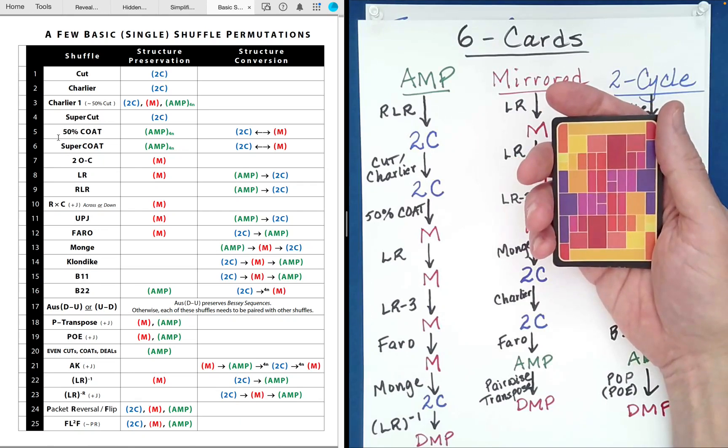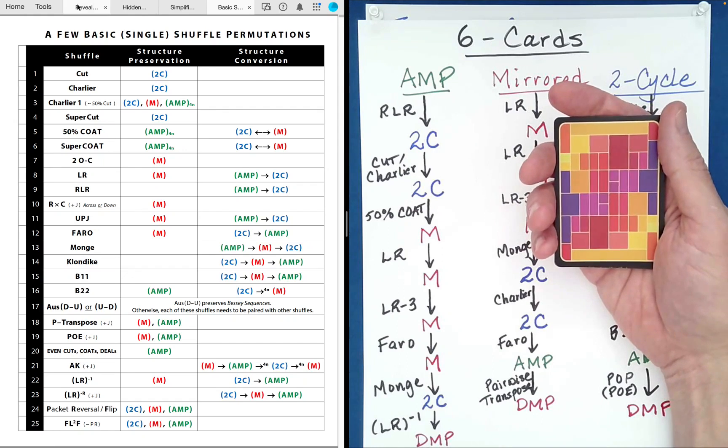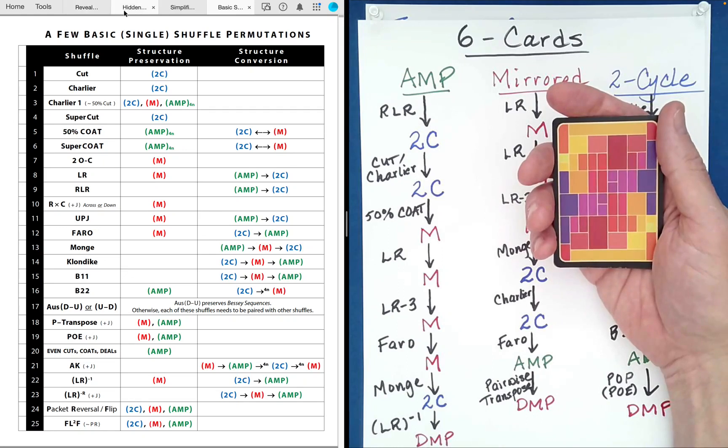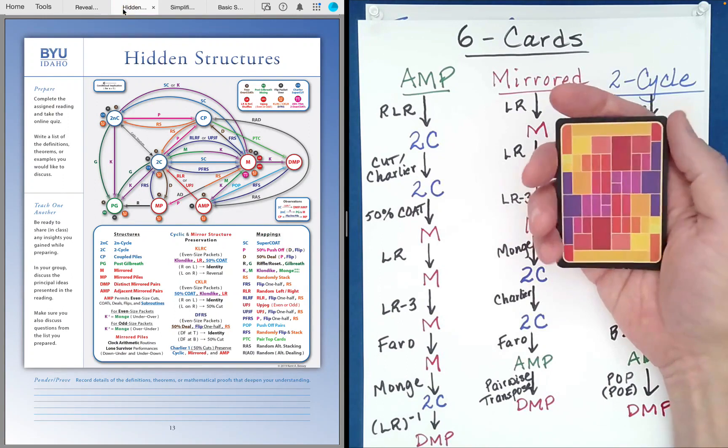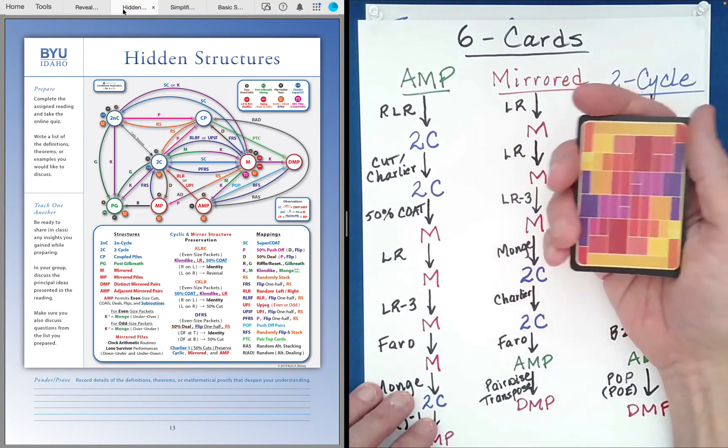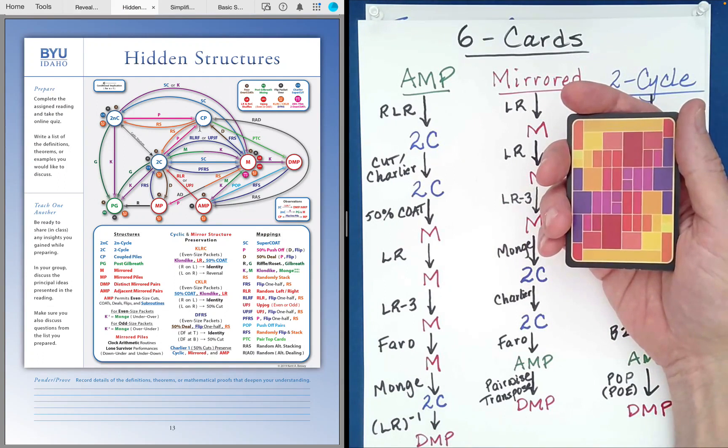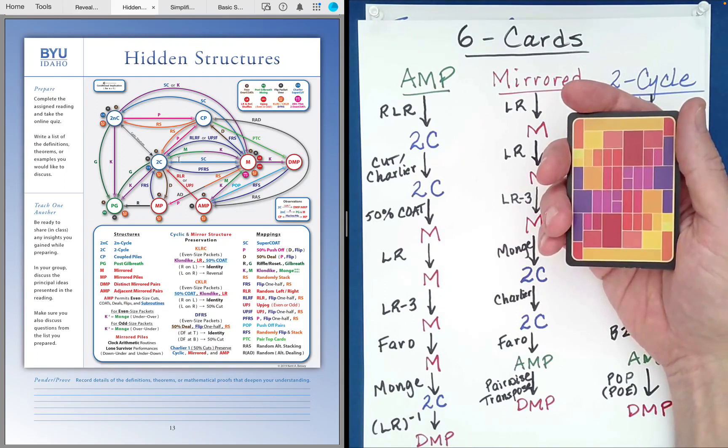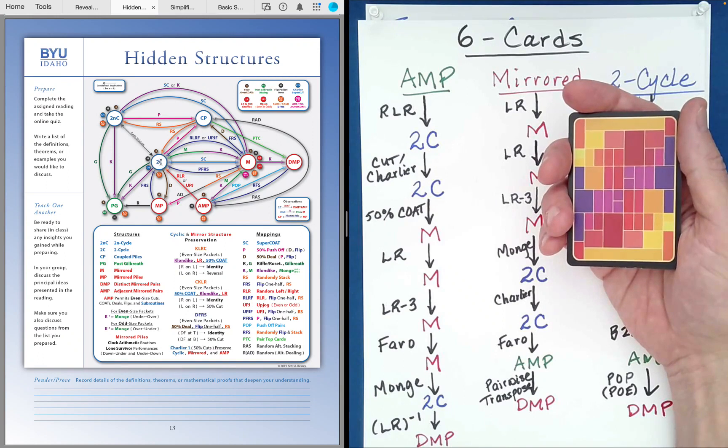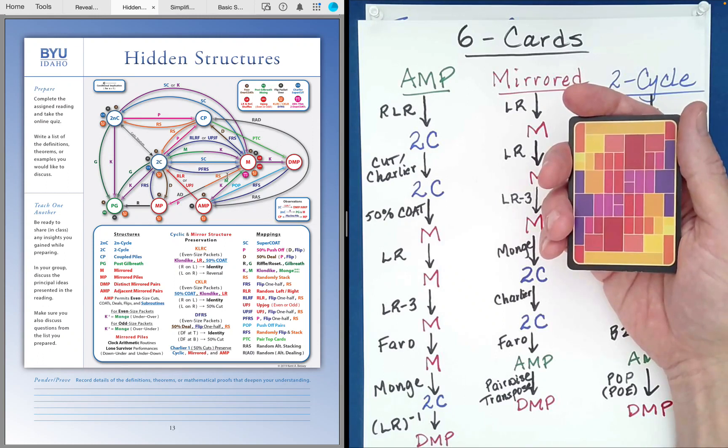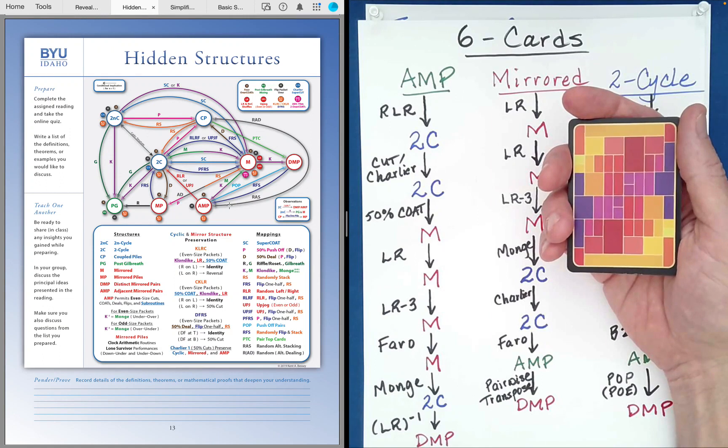Distinct mirrored pairs. That's all it stands for. So let's go back. Let's go to the full hidden structures diagram that we showed you in part one. So if you come over here. Now the three structure types that we're focusing on in this particular series, really, are the two-cycle structures over there. And then to the right, we have mirrored. And then down here below, we have an AMP. Well off to the right of the mirror, there's something called a DMP.